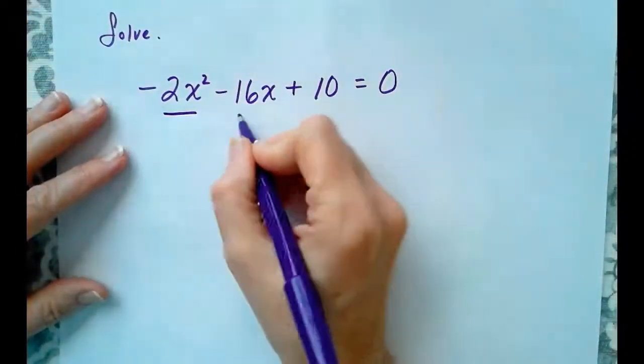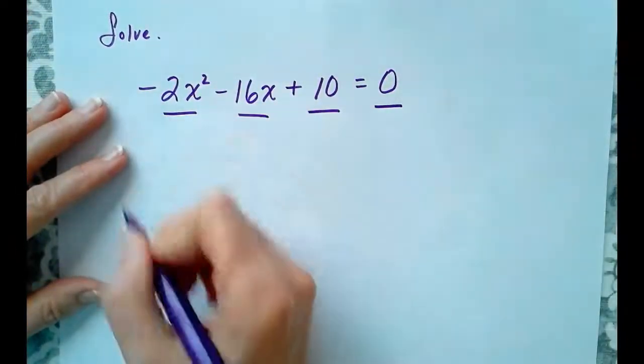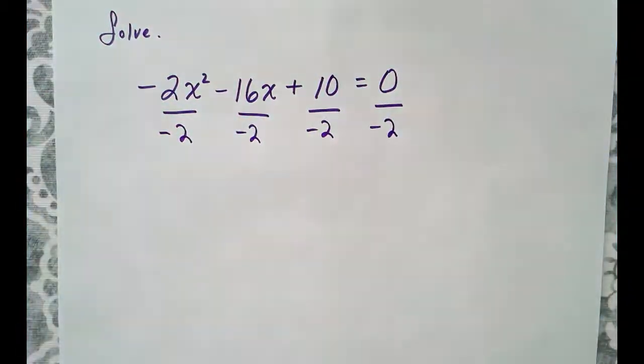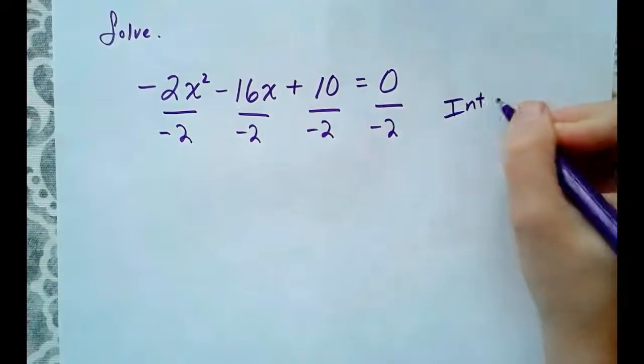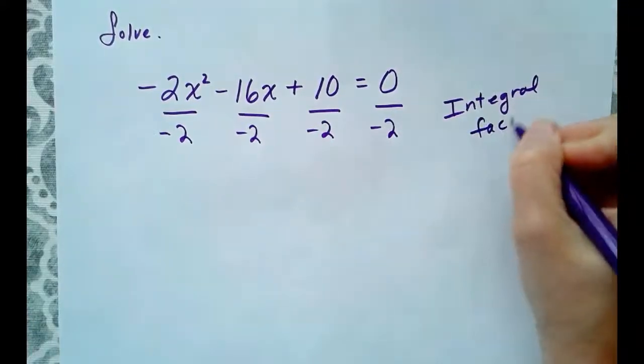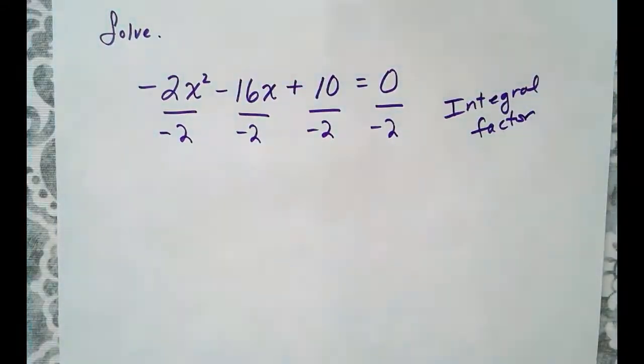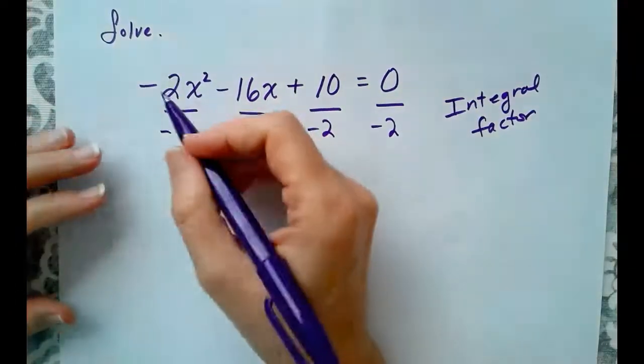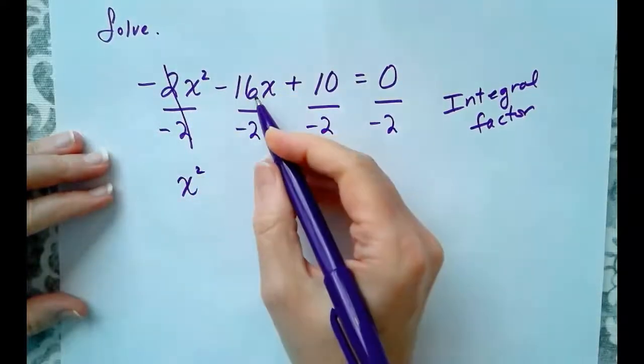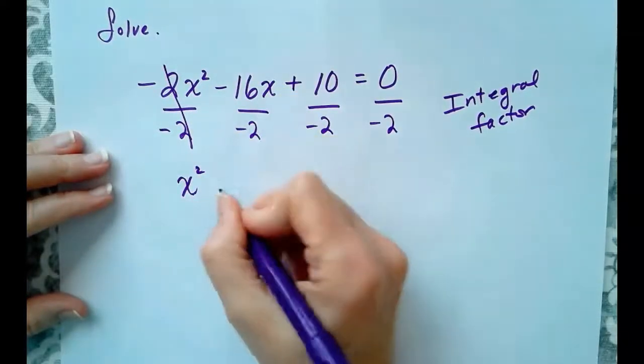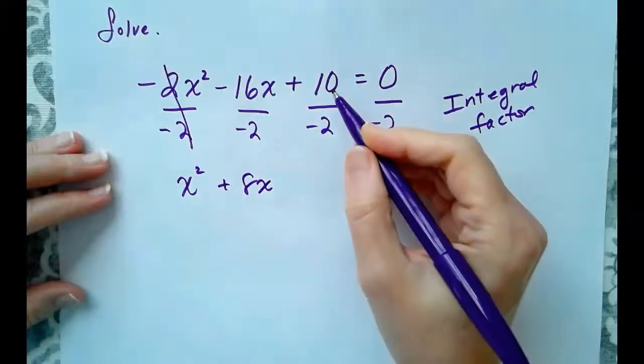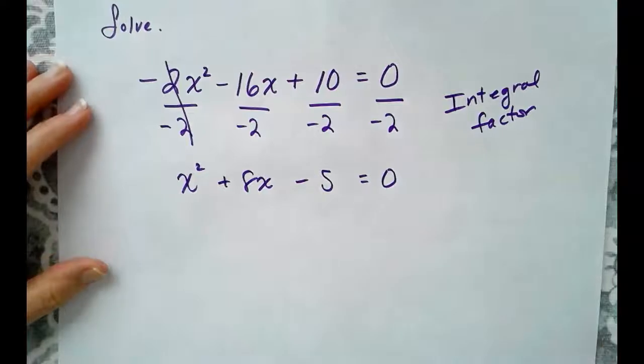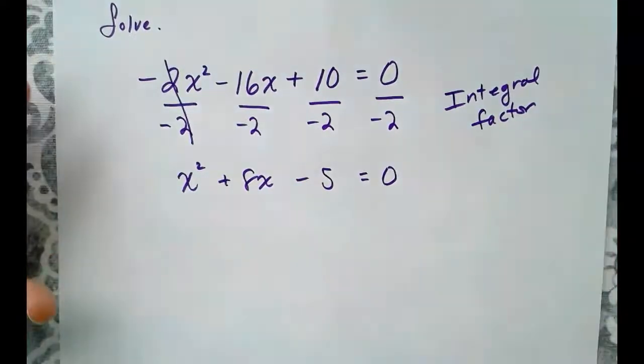So, that's what I'm going to do. I'm going to take that -2 that's up front, and I'm going to divide it away. We can always get rid of an integral factor. The integral factor that we are dividing away is -2. So, when I divide everything through by -2, I get x² + 8x - 5 = 0. And now, I have a good candidate for completing the square.